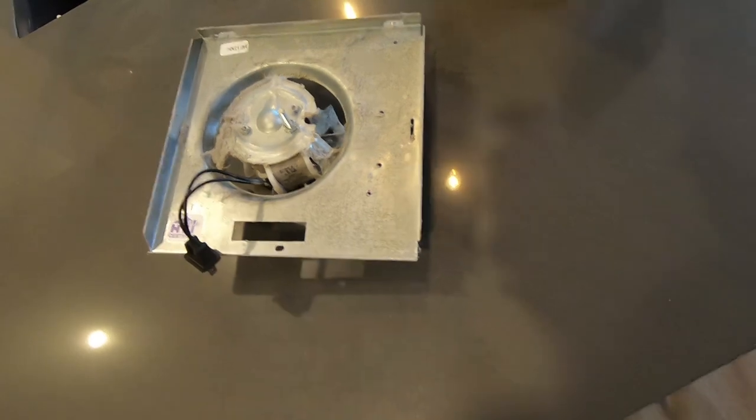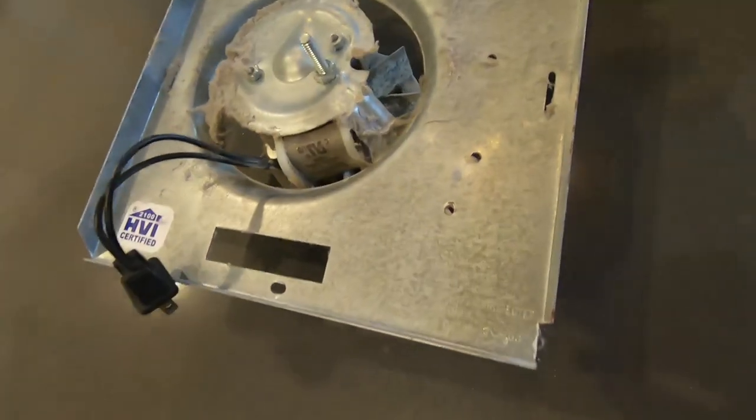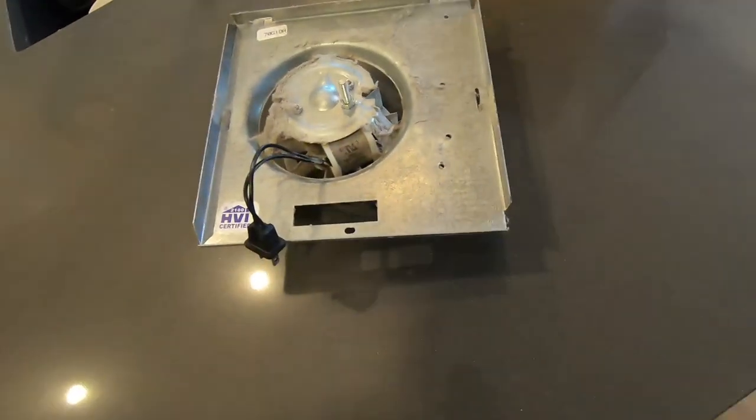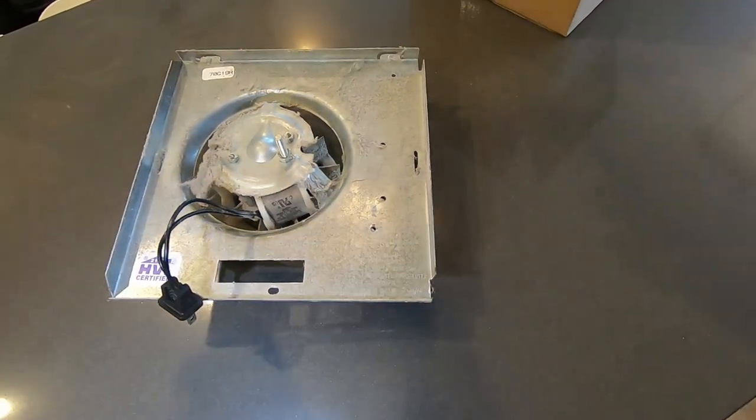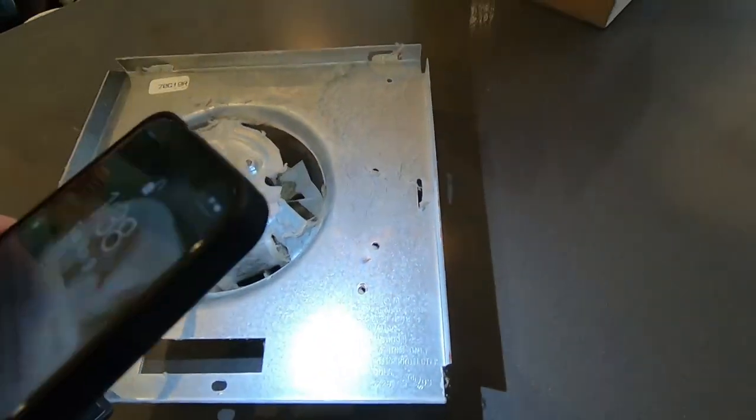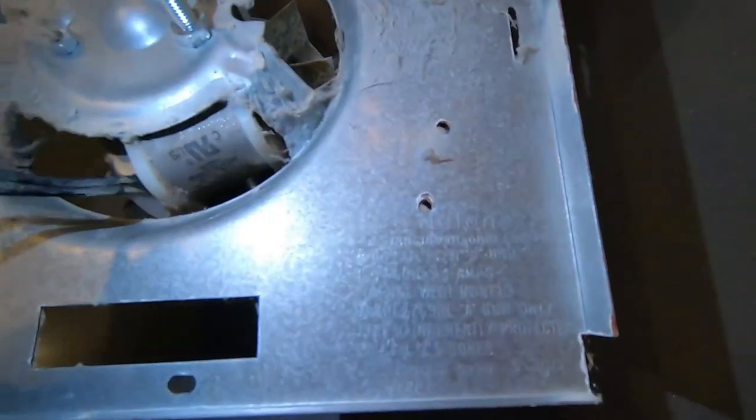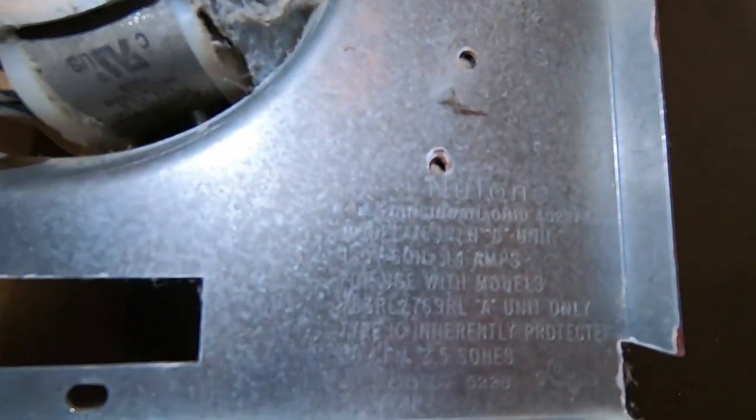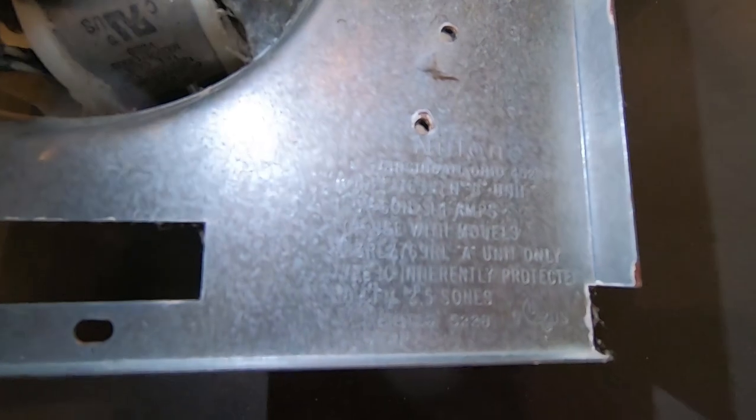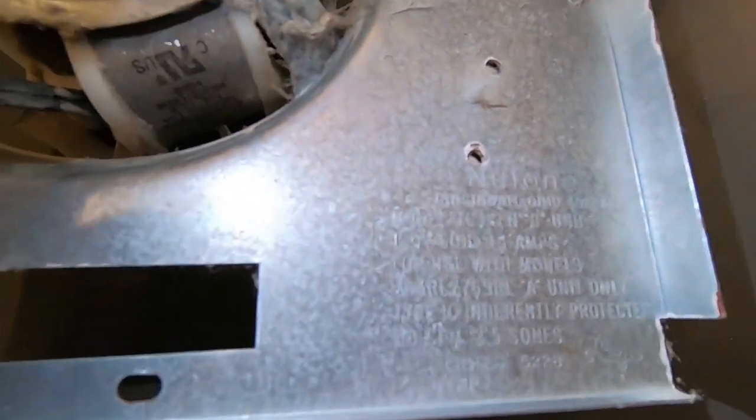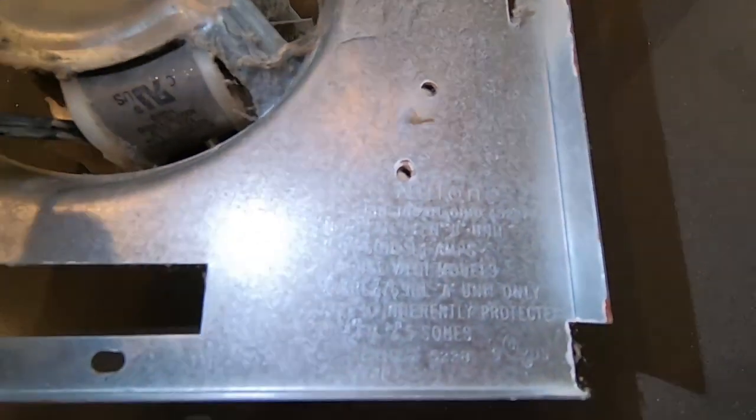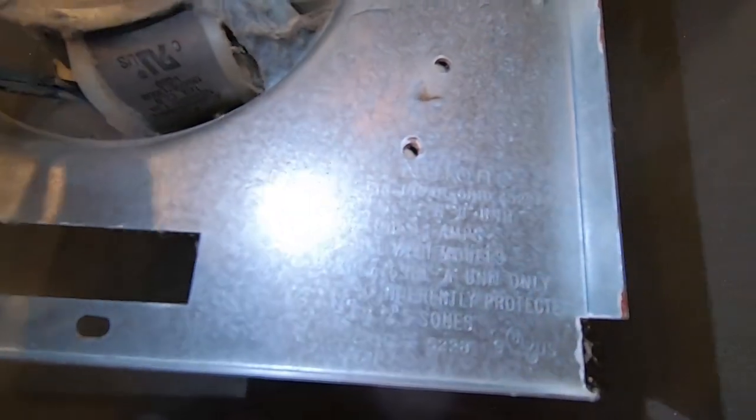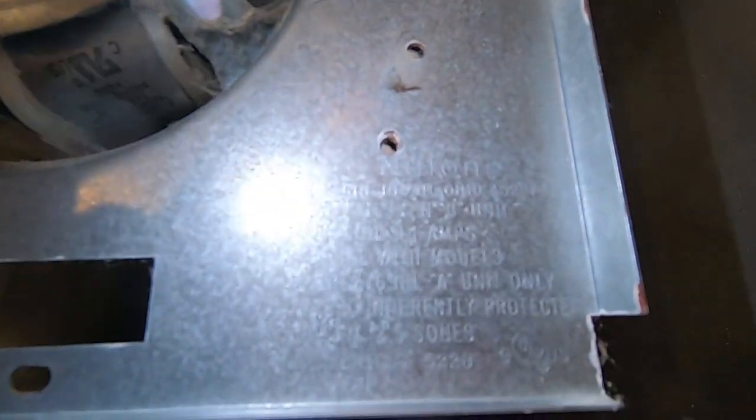On this fan assembly, it's hard to see, but on this plate itself right here in this corner, there's some words there. On there it says Nutone, and then there's actually a model number. I took some rubbing alcohol and cleaned it up so I could read it. This particular one says model 763RLN.